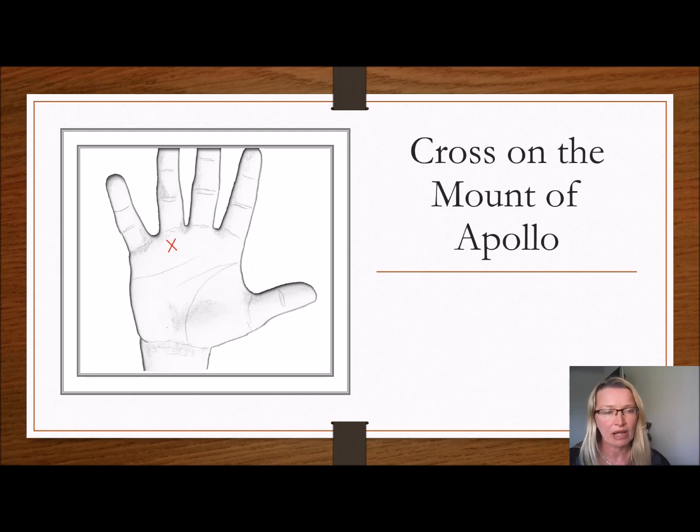Cross on the mount of Apollo, so the mount beneath the ring finger. Now don't forget, if there is a line that rises from up here, if there's a line that comes across there, that's not a cross. The cross has to be independent on its own as per picture here. So a cross on the Apollo mount shows some kind of a loss of reputation or frustration in the pursuit of success or happiness, because the mount of Apollo represents happiness and social life. So a cross there might just indicate that something may have happened to affect the person's reputation.